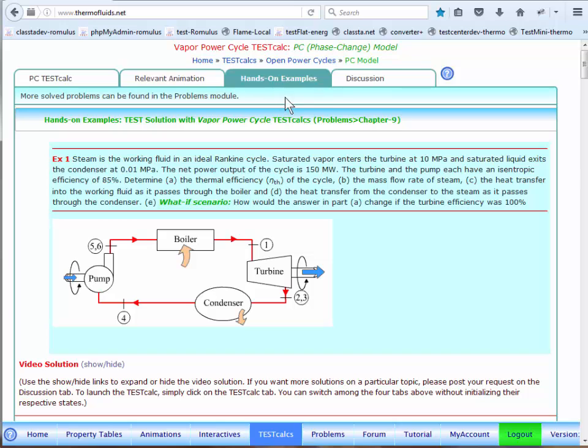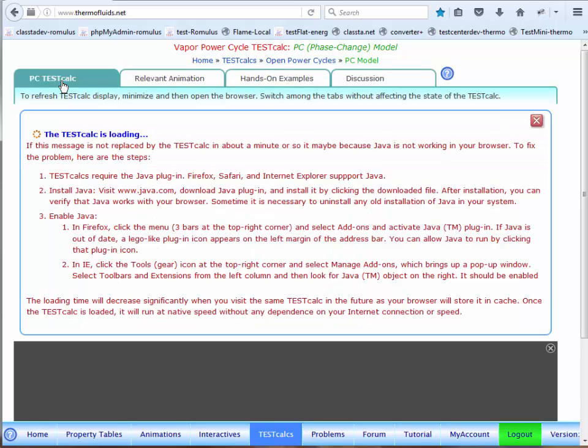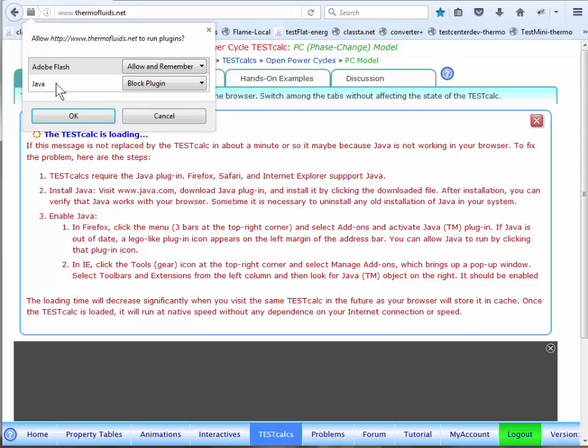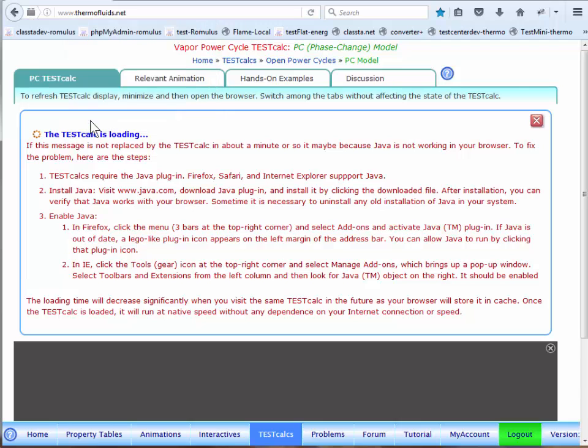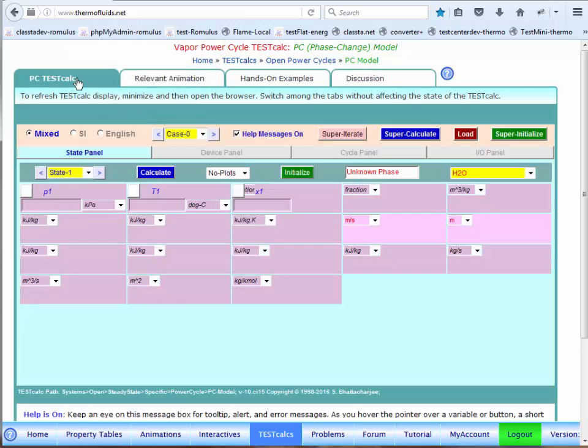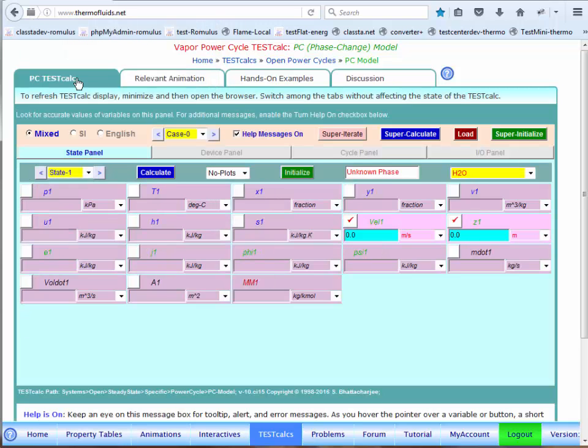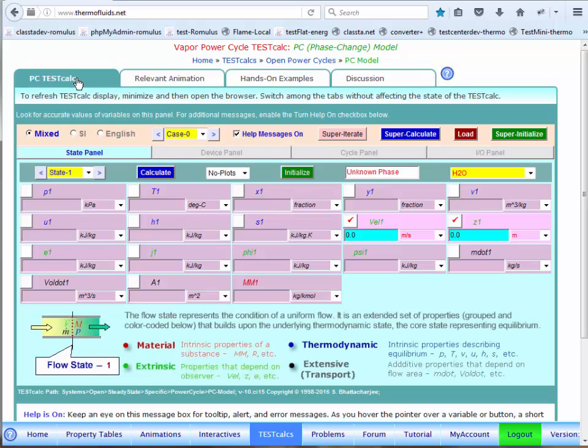That brings us to the TESTcalc page. We are on the hands-on examples, and currently we are trying to solve this particular problem. Once you go to the TESTcalc tab, it launches the TESTcalc. In Firefox, by default, Java is blocked. So you have to go and allow, and that will launch the TESTcalc. It takes a while to load the TESTcalc, but once it is loaded, it runs at native speed. OK, so let us get started.